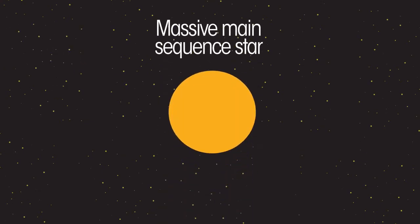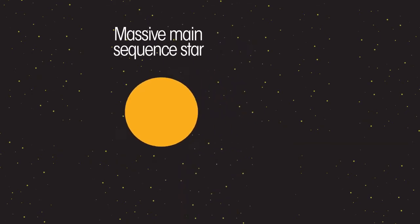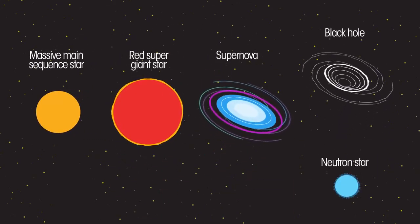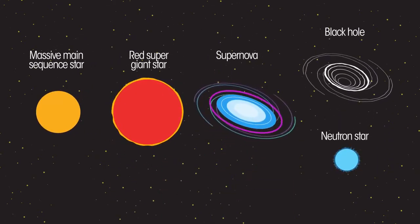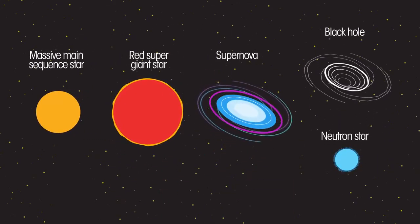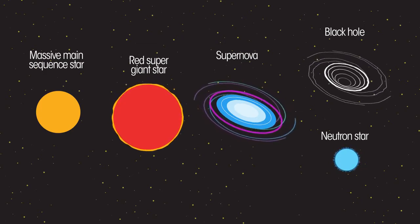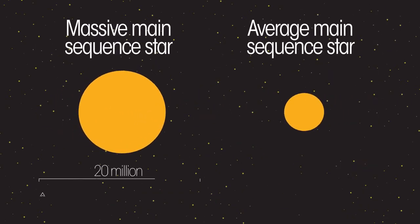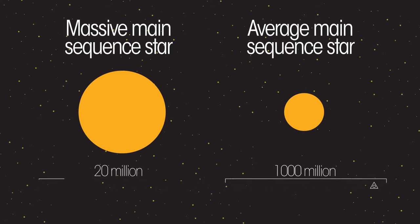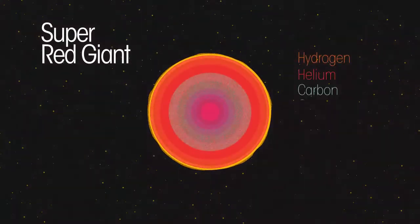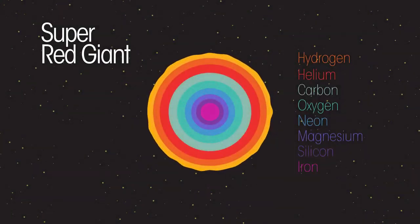What about bigger stars? What happens to them? They follow a different pattern. These stars too eventually run out of hydrogen, but quicker than a smaller star would. Massive stars as a result have a much shorter main sequence life than smaller stars. These stars then expand to become super red giants, now full of all the elements up to iron.